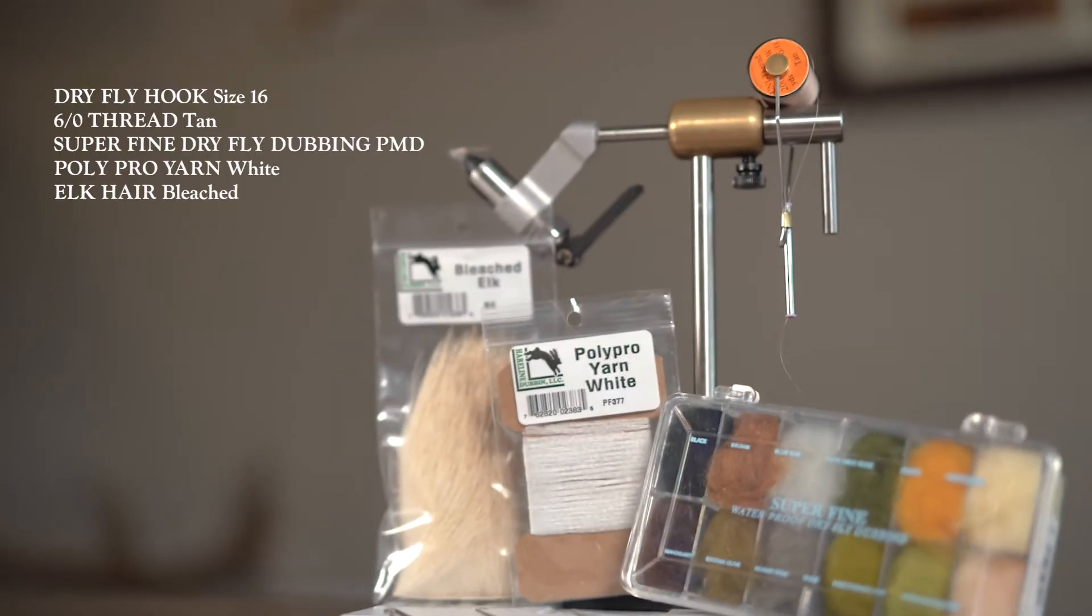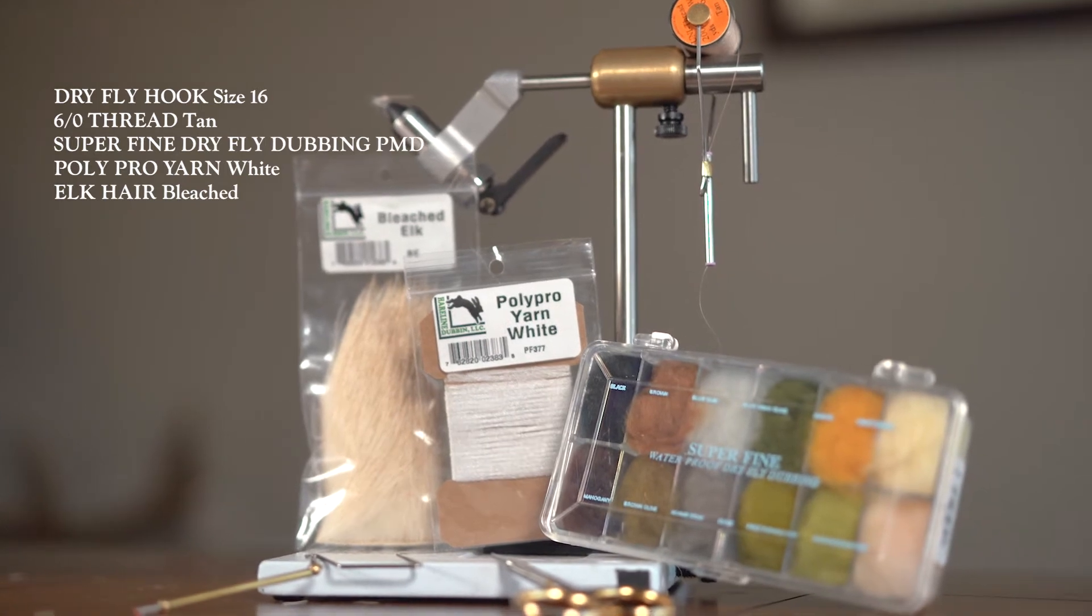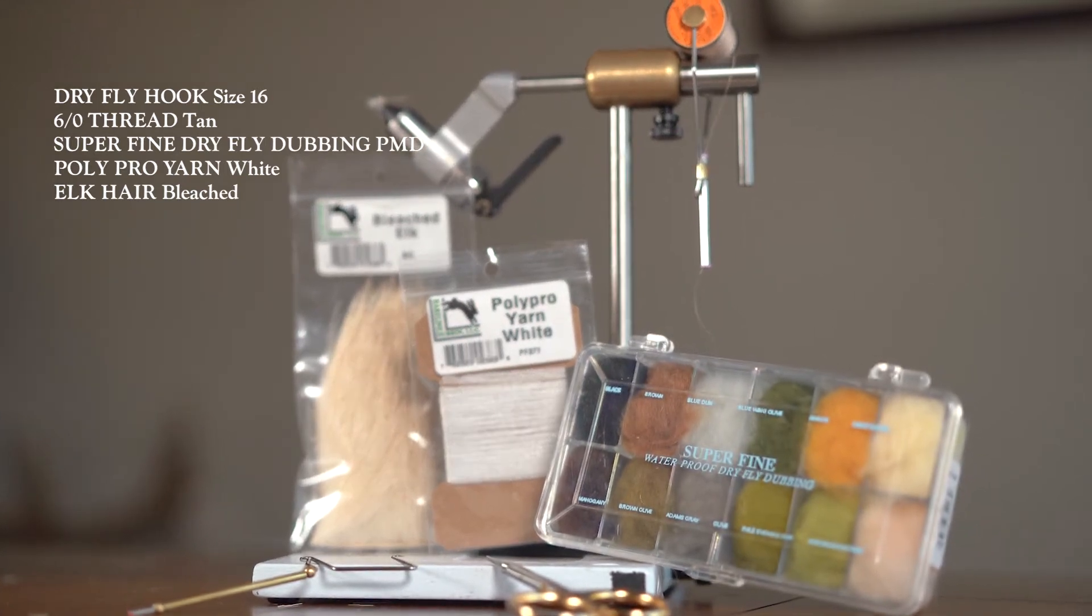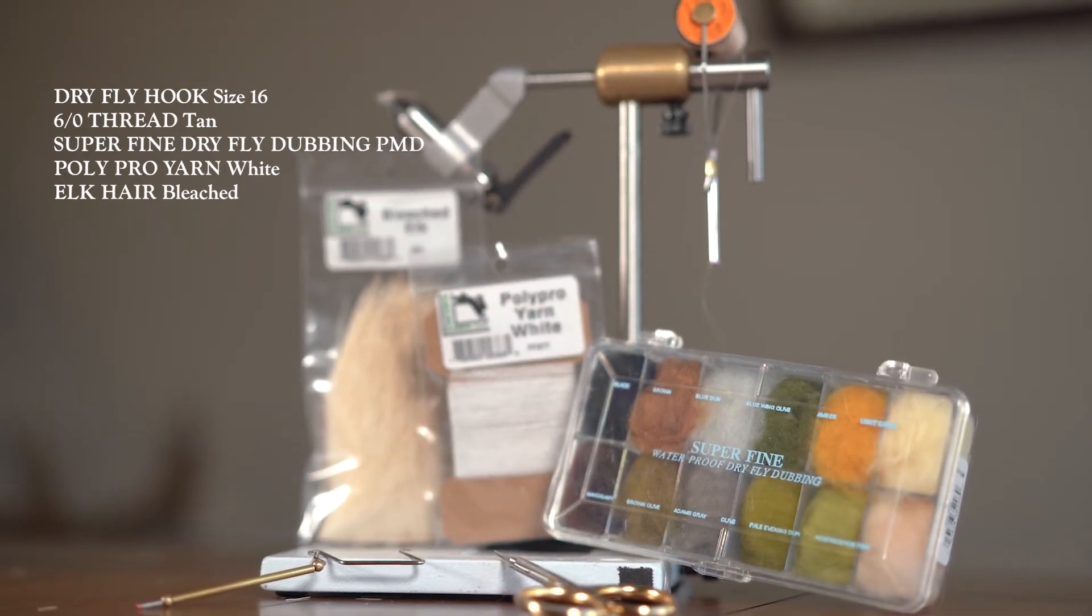The materials you'll need to tie this fly are a size 16 dry fly hook, 6-aught tan thread, PMD colored super fine dry fly dubbing, white polypro yarn, and bleached elk hair. I will leave a link to each of the materials in the description below.